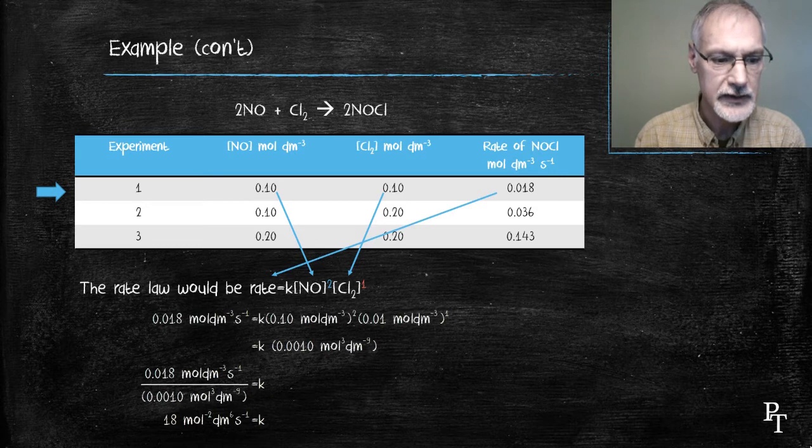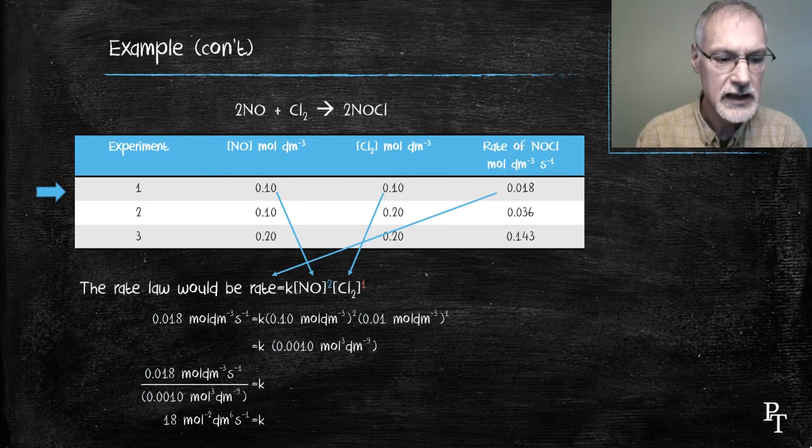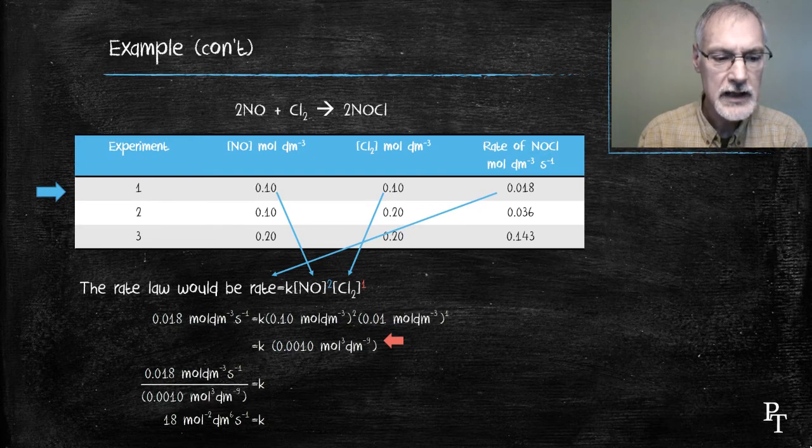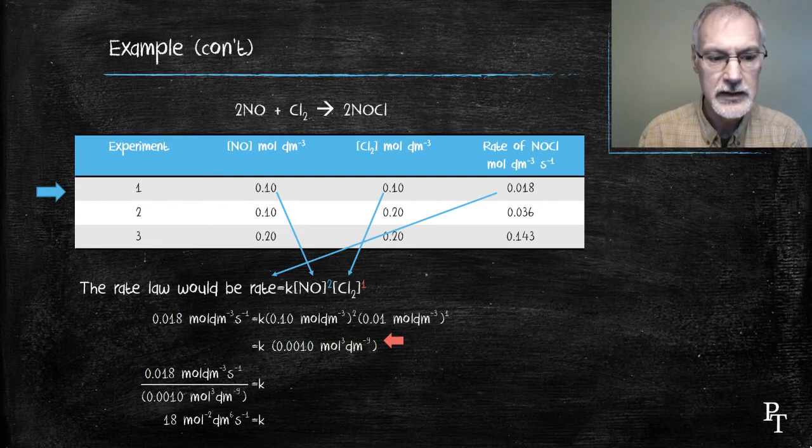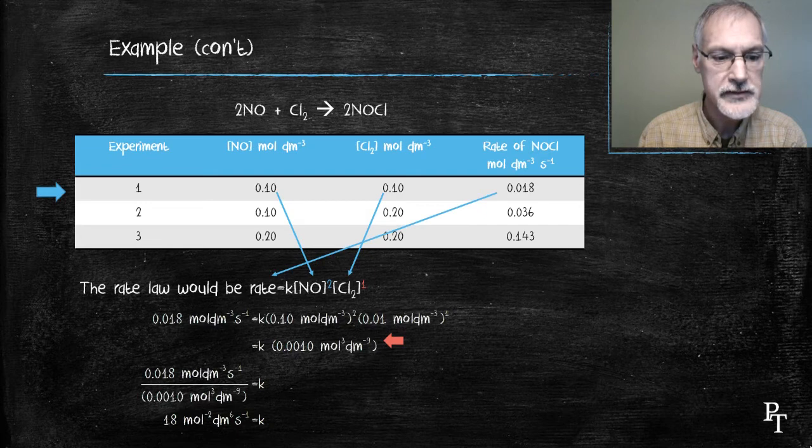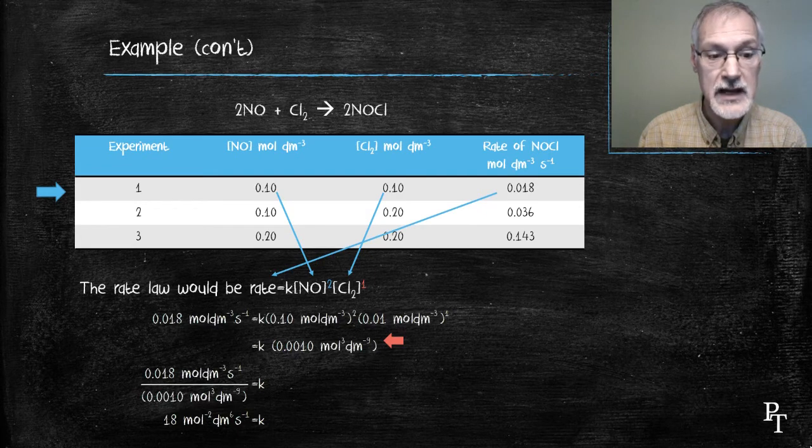A couple things to note in solving this. First off, in the second line, you'll notice the exponent here. When I multiply the values that I have here, moles per decimeter cubed squared times moles per decimeter cubed, I arrive at the following, moles cubed decimeters to the minus 9.